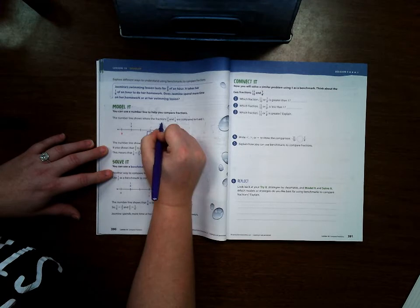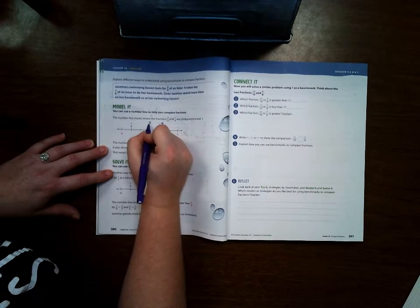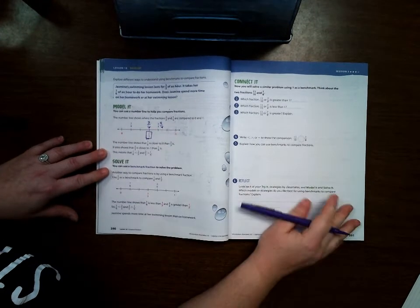But we know that two-thirds is the same as four-sixths. And in this case, one-half would be the same as three-sixths. So I can easily see that two-thirds is bigger than one-sixth.